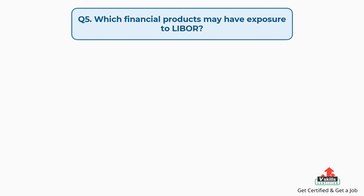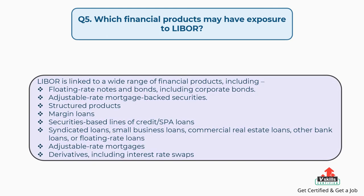Question number five: which financial products may have exposure to LIBOR? LIBOR is linked to a wide range of financial products, including floating rate notes and bonds including corporate bonds, adjustable rate mortgage-backed securities, structured products, margin loans, securities-based lines of credit or loans, syndicated loans, small business loans, commercial real estate loans, other bank loans or floating rate loans, adjustable rate mortgages, and derivatives including interest rate swaps.